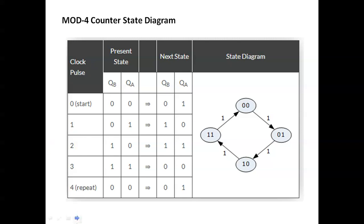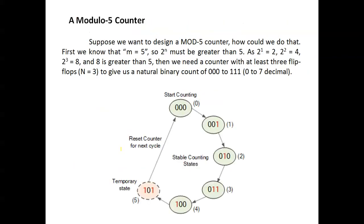The count goes 0, 1, 2, 3, then repeats again: 0, 1, 2, 3, and so on. For a mod 5 counter, you need 3 flip-flops, because after 4 comes 5, and for 5 to 8 we need 3 flip-flops. With n = 3, you get 2^3 = 8, so 3 flip-flops cover counting stages 0 to 7. Here we only count 0, 1, 2, 3, 4, then it resets and repeats automatically — that is the mod 5 counter.